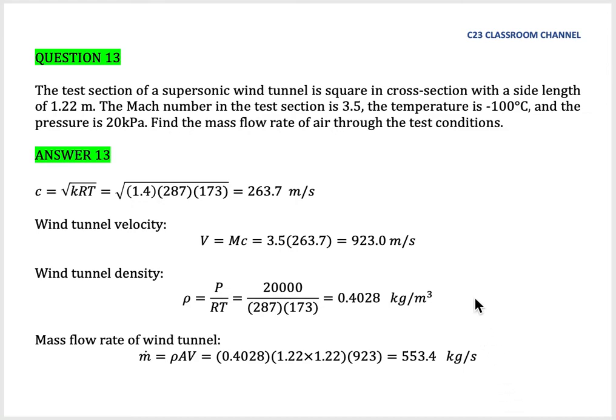Compressible flow tutorial number 13. The test section of a supersonic wind tunnel is square in cross-section with a side length of 1.22 meters.